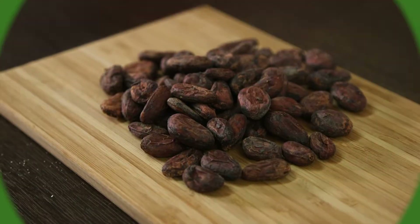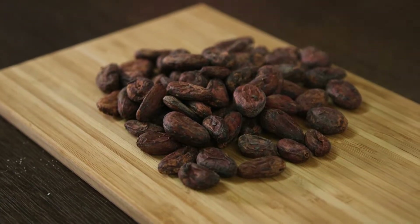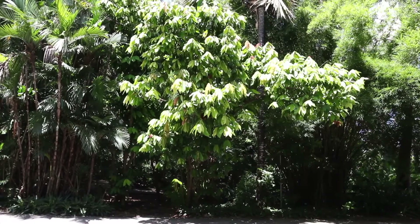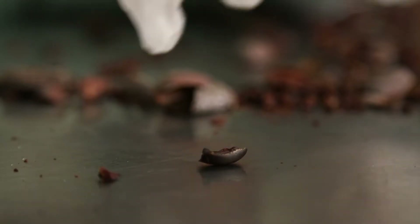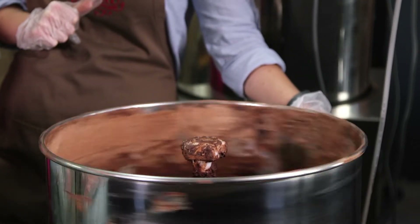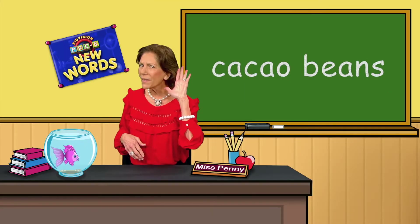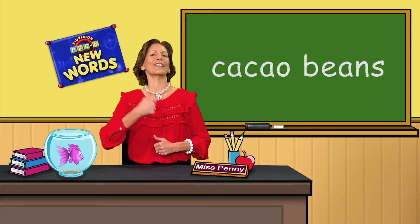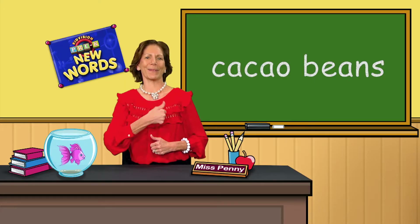Cacao beans. Cacao beans are found in the fruit of a cacao tree. The bean has a husk and a nib inside. The nib is processed to make chocolate. What was that word? Cacao beans. Good job.